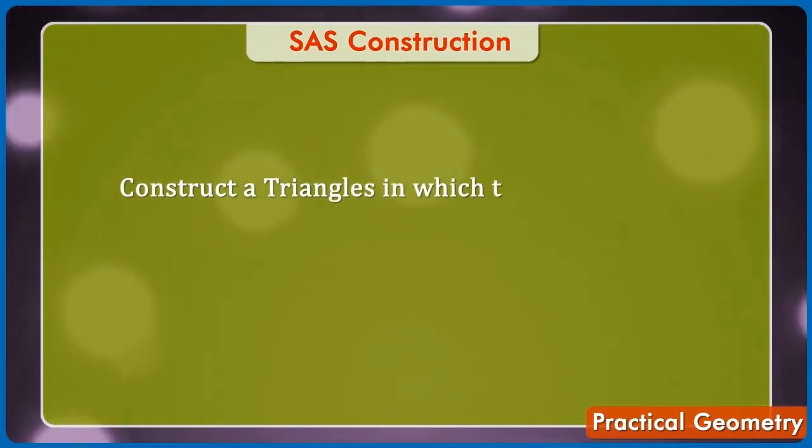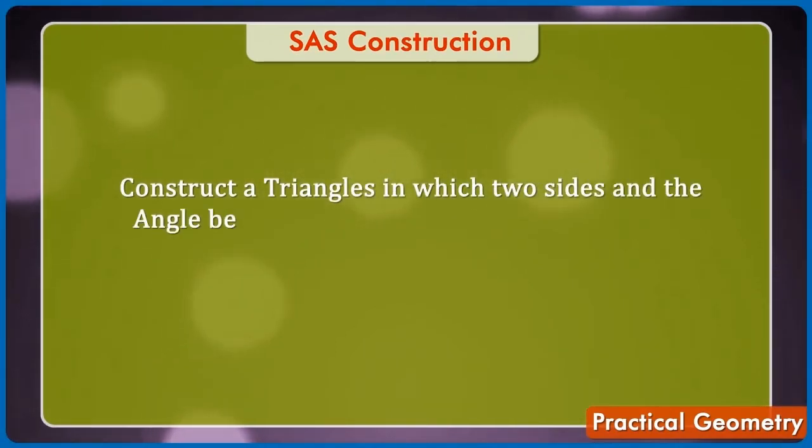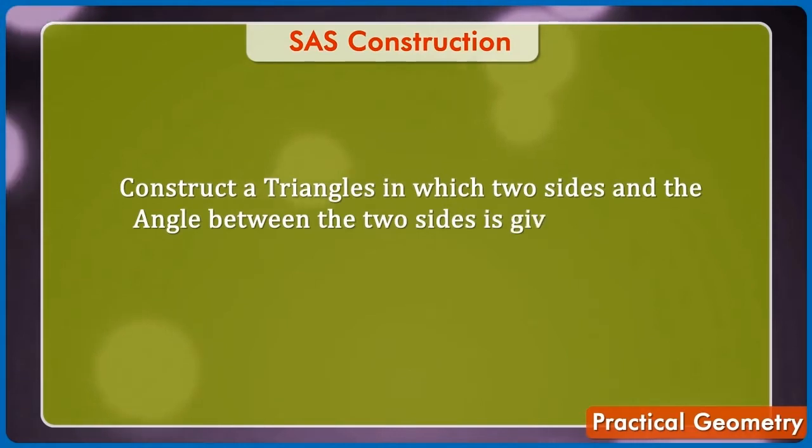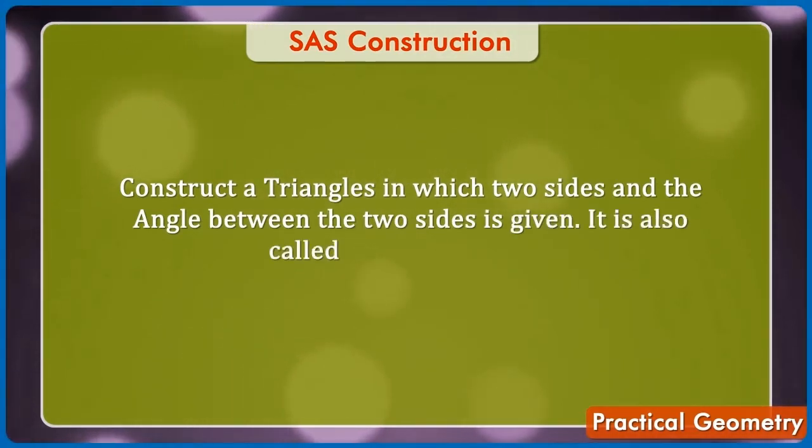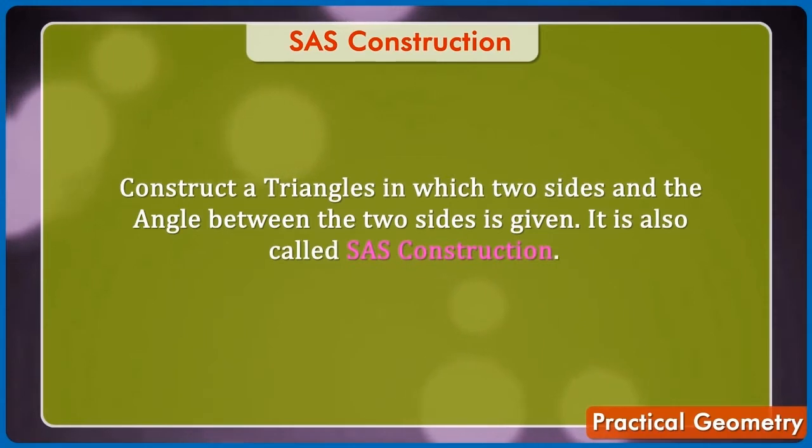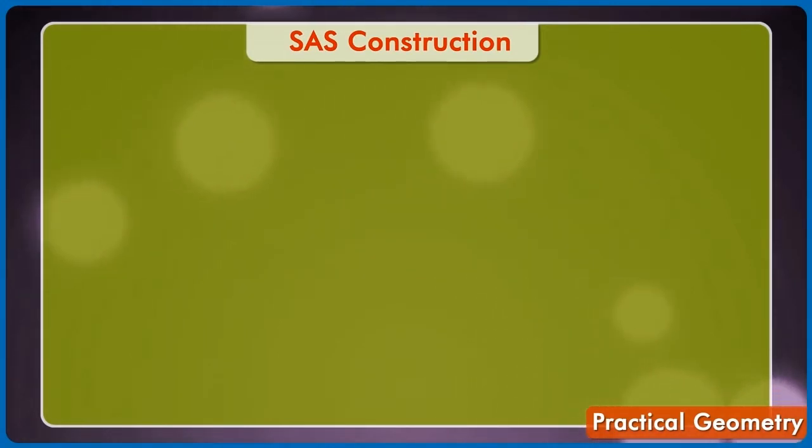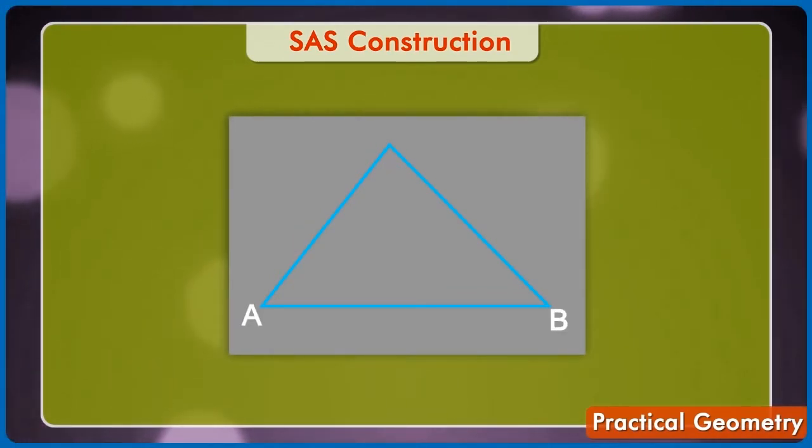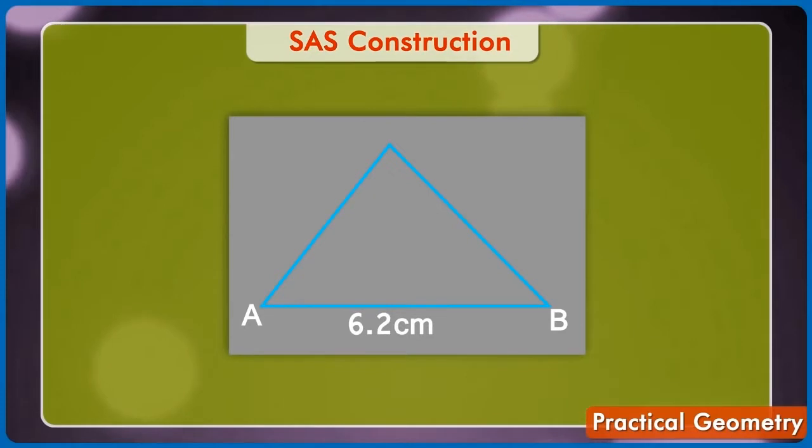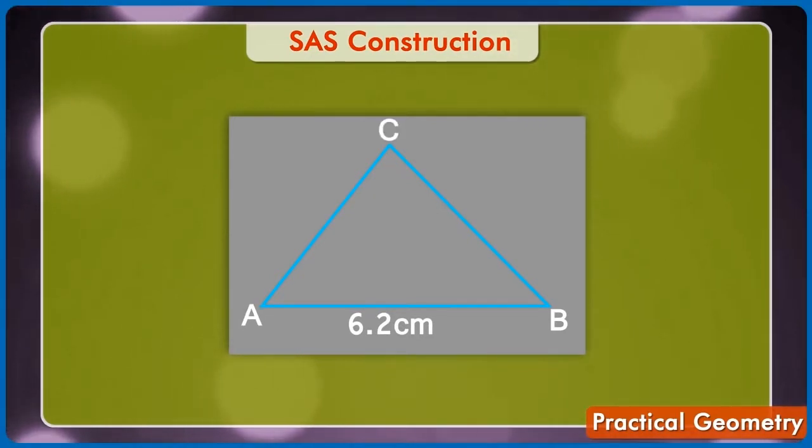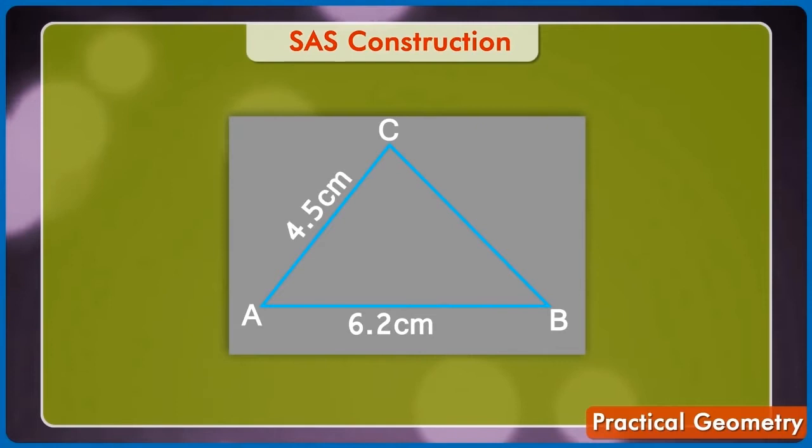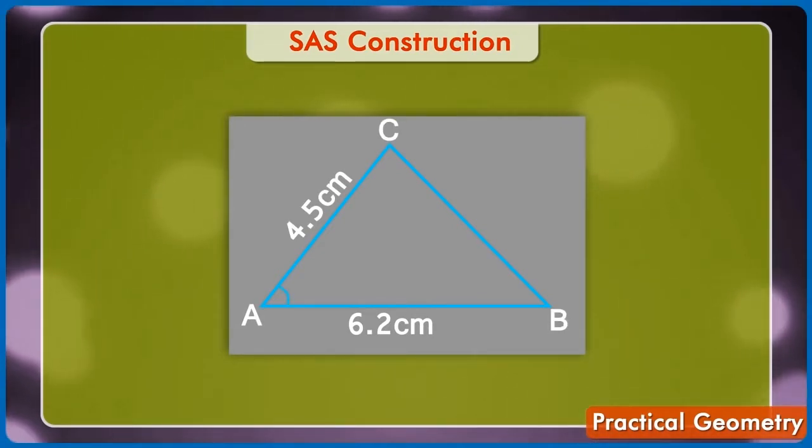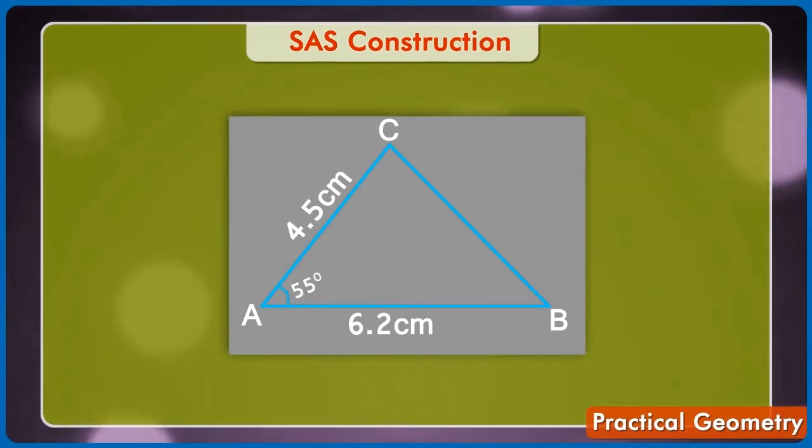Now, let's construct a triangle in which two sides and the angle between the two sides is given. It is also called SAS construction. For example, construct a triangle with side AB is equal to 6.2 cm, AC is equal to 4.5 cm and angle BAC is equal to 55 degrees.